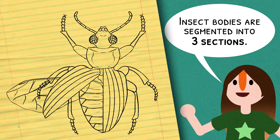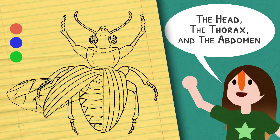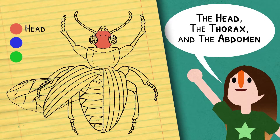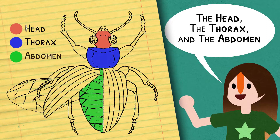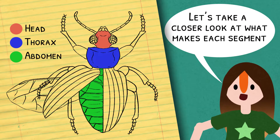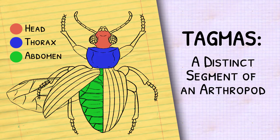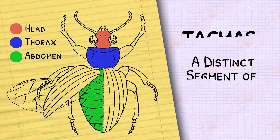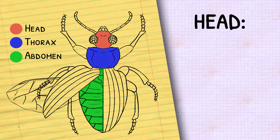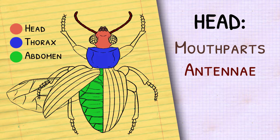Insect bodies are segmented into three sections: the head, the thorax, and the abdomen. The head contains the mouth parts, the antenna, and the insect's eyes, which unlike ours are compound eyes.